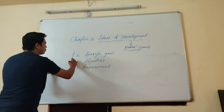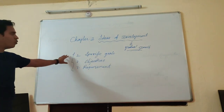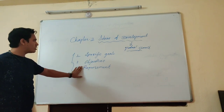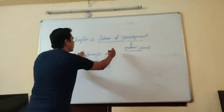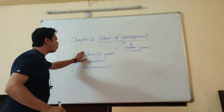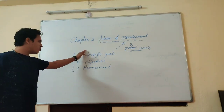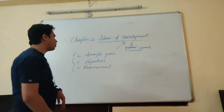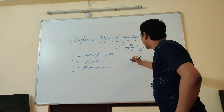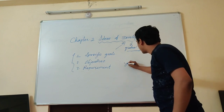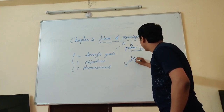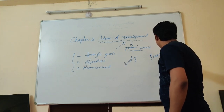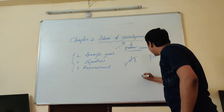While coming to these three points — specific goals, objectives, and requirements — we will consider all those things related to development. To find out all those, I will show you one more thing. The three points are: first, society; second, economy; and third, environment.